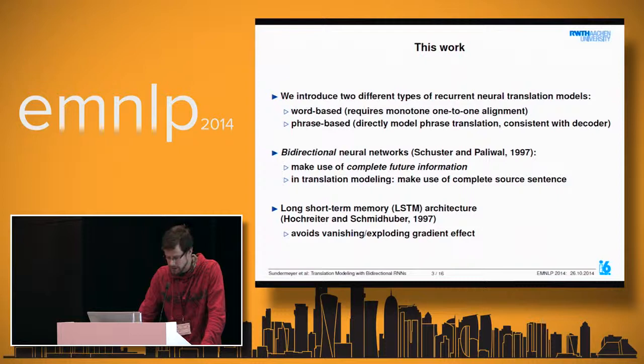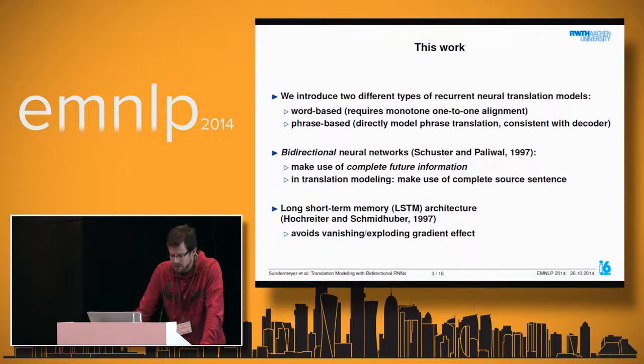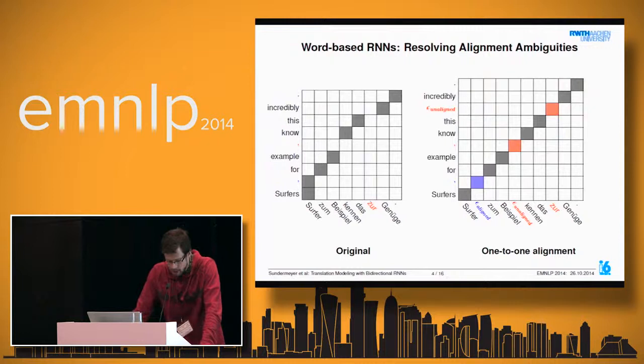All networks used in our experiments are long short-term memory networks—the LSTM architecture—which has been designed to avoid the vanishing or exploding gradient effect. Let's now dive into the explanation of the models, starting with the word-based models.